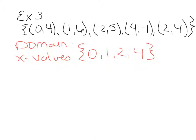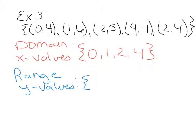The range is the set of y values. Looking for the y coordinates: 4, 6, 5, negative 1, 4 — and the 4 is listed twice, but we will only use it once in our set. We will put them in numerical order, so the range is negative 1, 4, 5, 6. And that will be the domain and range for that relation.